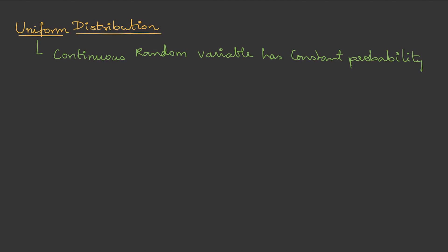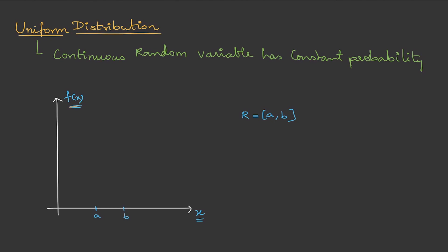To understand this, let us take a graph. The x-axis is the random variable and the y-axis is the function. For the random variable, there is a limit. Let us assume that the random variable extends from a to b. The function f(x) equals 1 divided by (b minus a) as long as x belongs to the random variable, and it is 0 if x does not belong to the random variable.